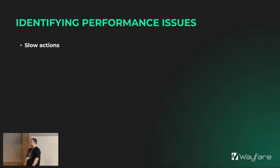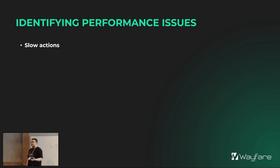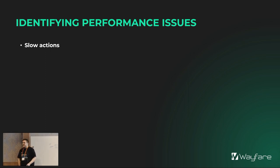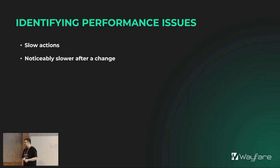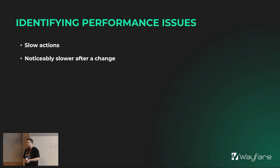The first way you're going to identify performance issues is that things start being slow — slow in the sense that something that's not supposed to be slow, like building a piece of UI or clicking a button and having to wait 10 seconds. That's the way you identify them, but slow needs to be defined and not everyone's going to have the same definition. You've also got things becoming noticeably slower after a change — something going from two seconds to five seconds.